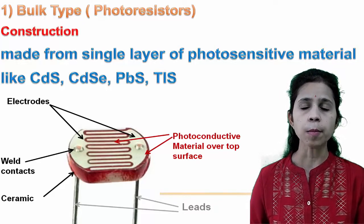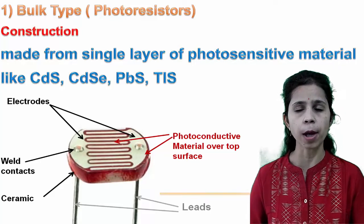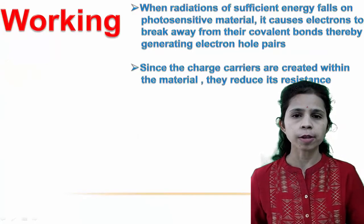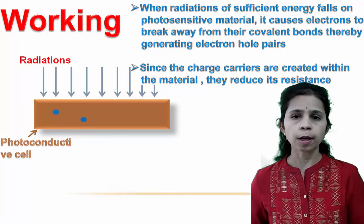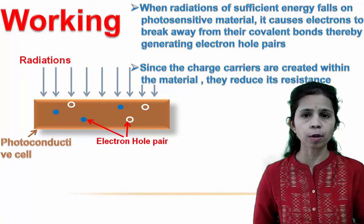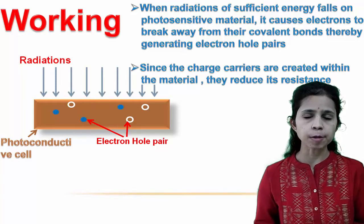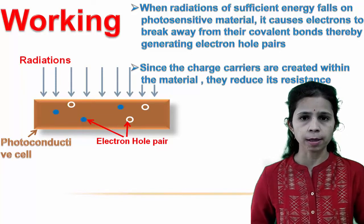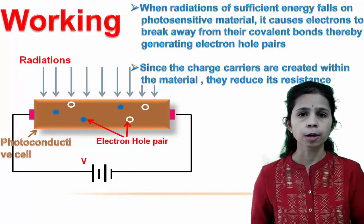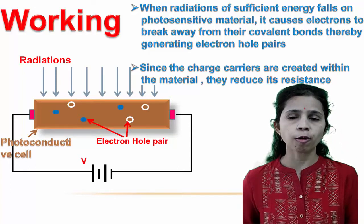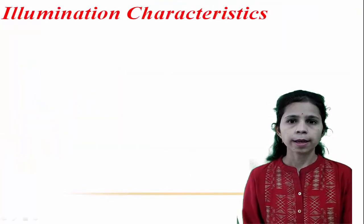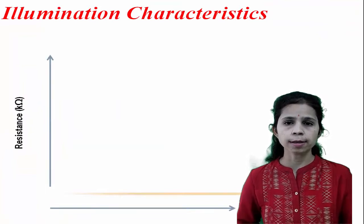For extra protection, the photocell can be enclosed in a metallic case with a glass or plastic cover. These photo cells are available in various sizes, from one-eighth of an inch to one inch in diameter. When radiation of sufficient energy falls on the photoconductive cell, electrons break away from covalent bonds, generating electron-hole pairs. This reduces the resistance of the material. An external power supply is needed to provide direction and path for current flow, varying from a few volts to several hundred volts.